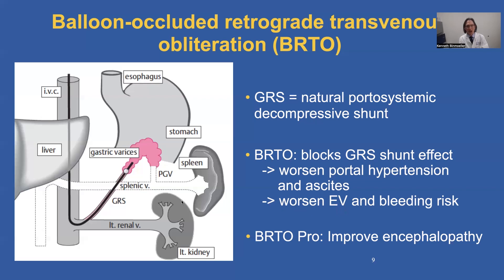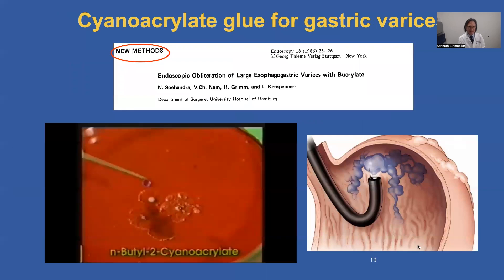BRTO will worsen or create esophageal varices and increase the bleeding risk. The advantage of BRTO, apart from obliterating gastric varices, is that it will improve encephalopathy.